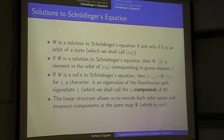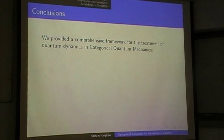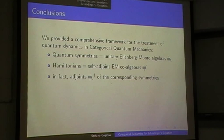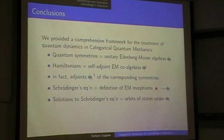This is quite a cool feature and it's related to the fact that Fourier transform and strong complementarity are pretty much the same thing — but that's matter for a different paper. To conclude: we provided a framework for the treatment of quantum dynamics in CQM, and showed that quantum symmetries can be thought of as unitary EM algebras. We used the fact that observables are self-adjoint EM algebras to show that symmetries are exactly adjoined to their own invariants. We showed that Schrödinger's equation can be thought of as the defining equation of an EM morphism, with solutions corresponding to orbits of states, and the extra conclusion that they also encode the energy spectrum.